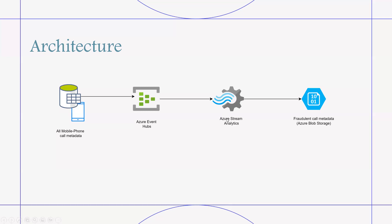Step three: the Stream Analytics job runs a predefined query to transform the input stream and analyze it based on a fraudulent transaction algorithm. This query uses a tumbling window to segment the stream into distinct temporal units.